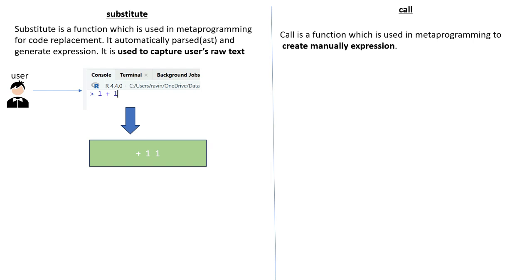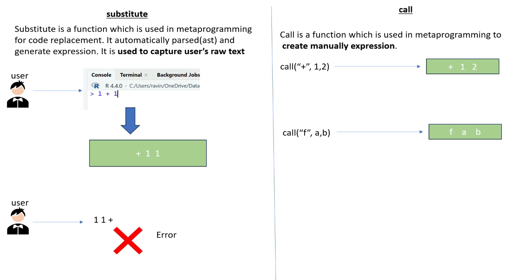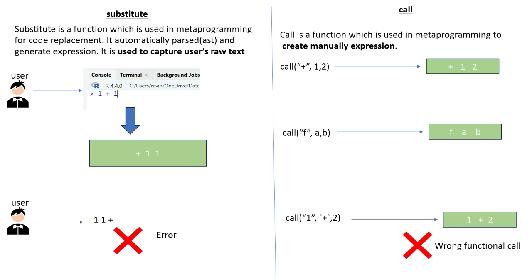That is what we do while using the substitute function. If you write something syntactically wrong, it will give you an error. Now let's see what call is. Call is a function used to manually create an expression. For example, this call function creates the expression plus(1, 2). However, if you write something like 1 plus 2 where 1 is not a function, it doesn't make sense and the evaluator gives an error.